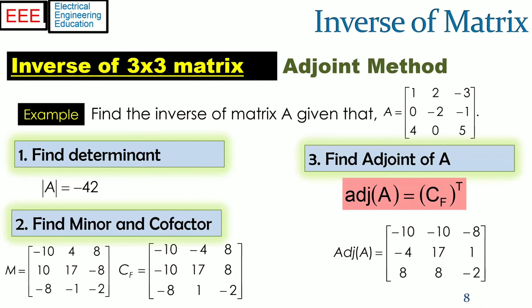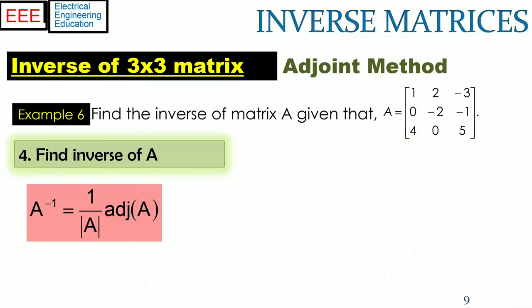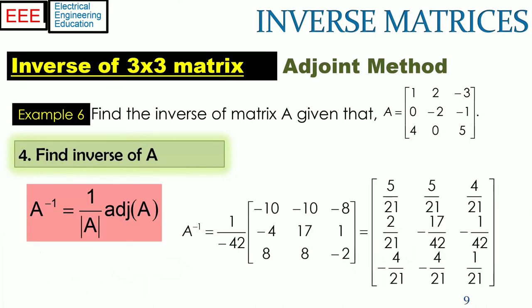The third step is to find the adjoint, which is the transpose of the cofactor matrix. As shown, the final step is to divide each entry of the adjoint matrix by the determinant of matrix A. This is the inverse of A. Note that the multiplication of A with its inverse should result into an identity matrix.